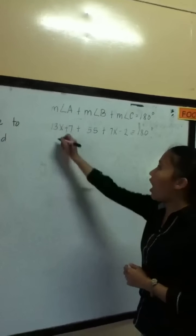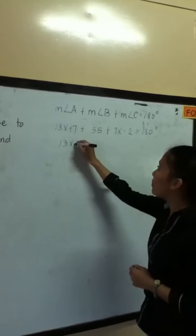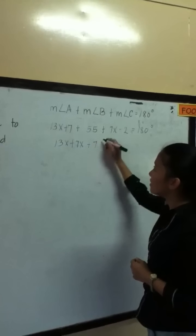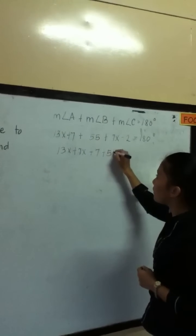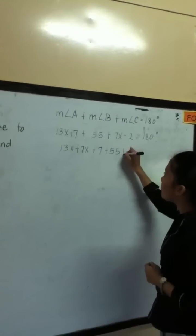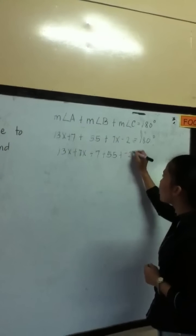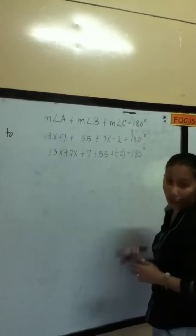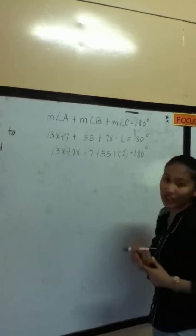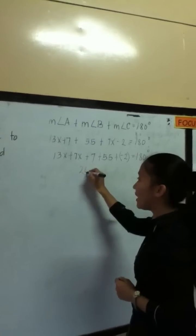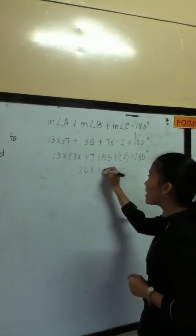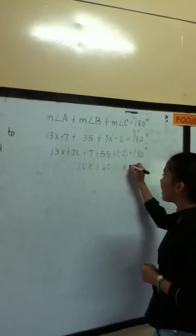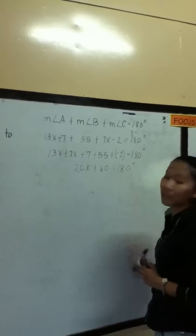Combining like terms, we get 13x plus 7 plus 55 plus negative 2, which equals 180 degrees. Now we can get 20x plus 60 equals 180 degrees.